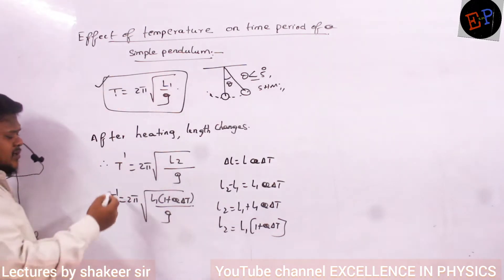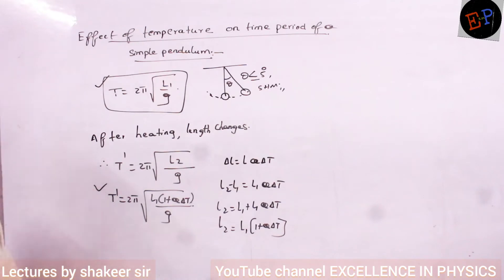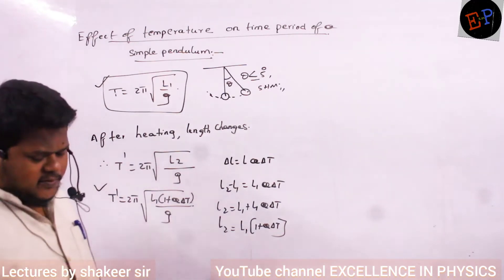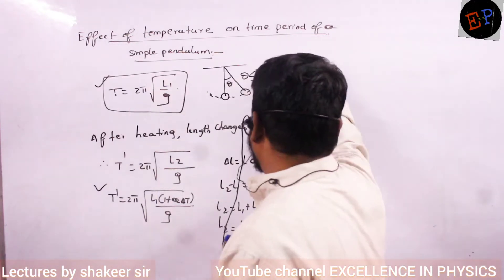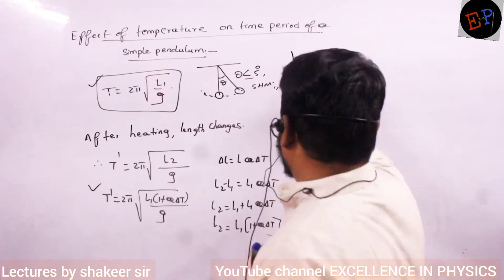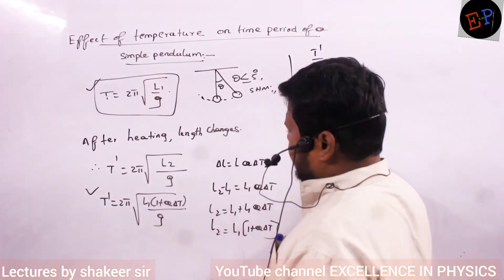This is the initial time period T and this is the final time period T dash. So if I divide both of them, I get T dash divided by T.